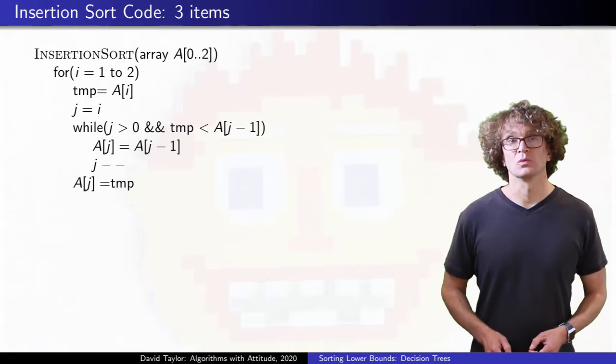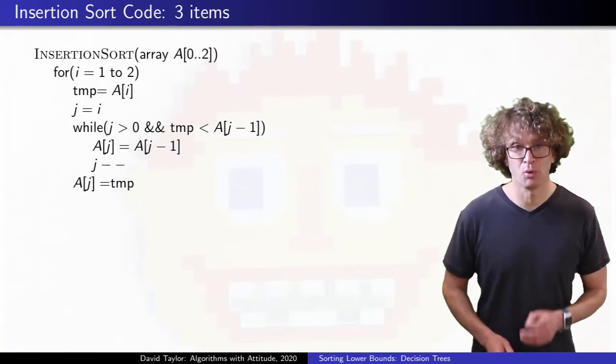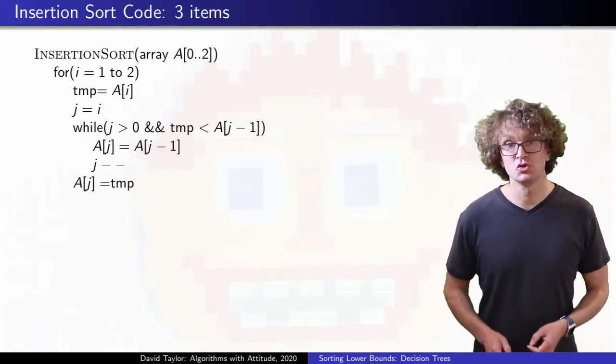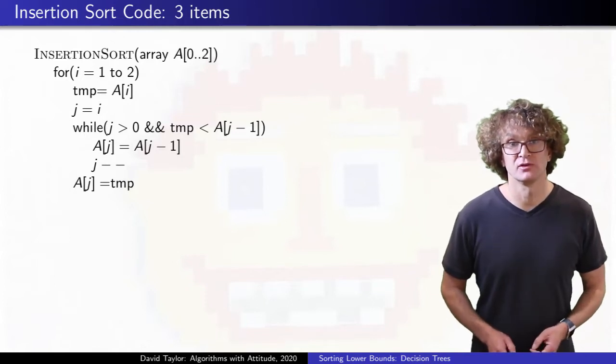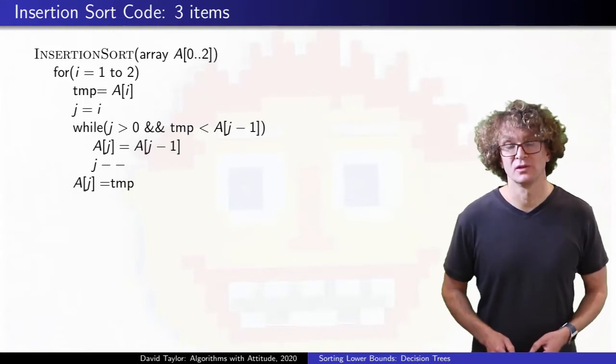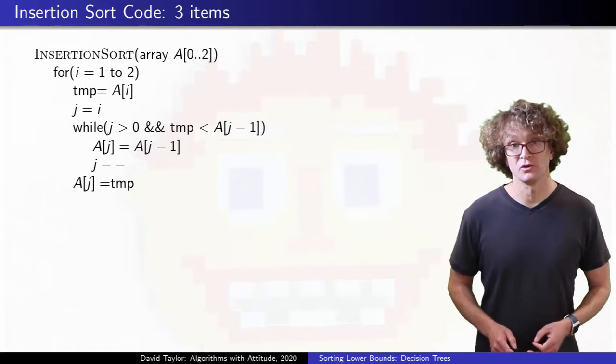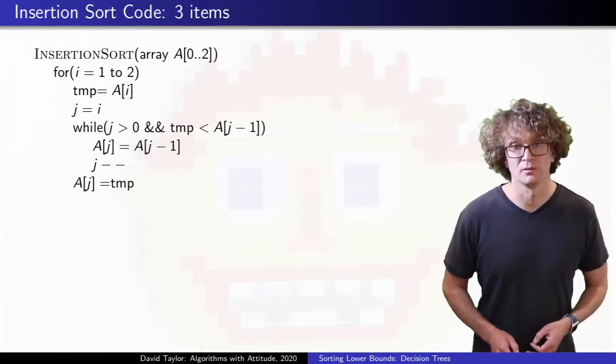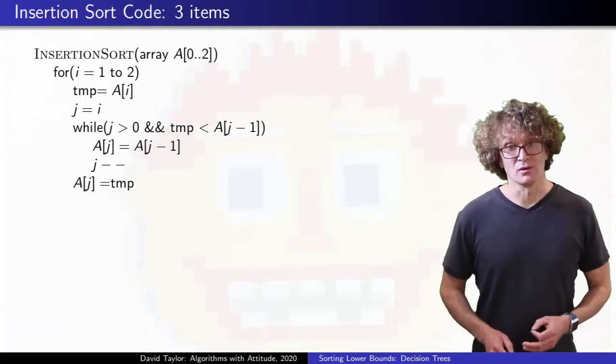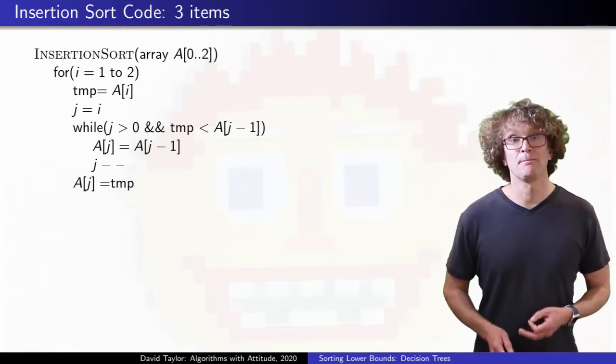This is what we are talking about when we say a comparison-based sorting algorithm. The important data-driven forks in the code happen because two different elements are compared against each other, the outcome of that comparison determines what will happen next in the code. Insertion, bubble, selection, heap, merge, and quicksorts are all comparison-based sorting algorithms, and there are more. They are general sorting algorithms that can sort any inputs as long as input values can be compared to each other.